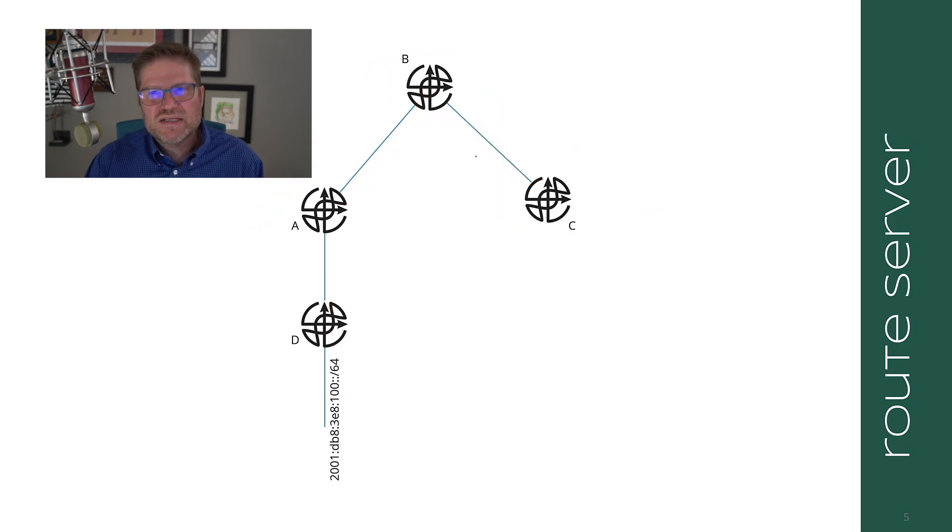This, of course, means that there must be some connectivity between C and A. Generally, this is done over a layer two fabric or something similar in an IX. But using a route server can be quite useful in some enterprise deployment or even data center fabric deployment situations.